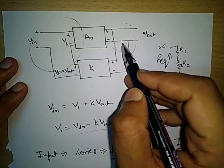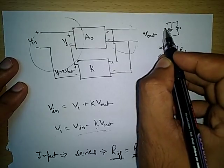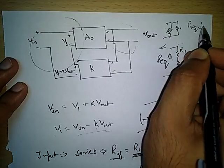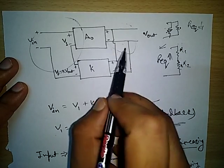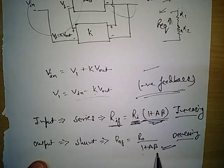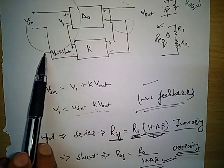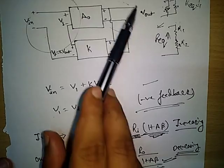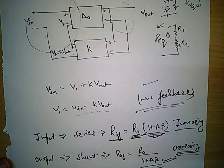At the output, there is a parallel or shunt connection. We know that when two resistances are connected in parallel, the overall equivalent resistance decreases — less than either individual value. So the output impedance decreases, and it decreases by the factor (1 + Aβ): R_OF = R_O / (1 + Aβ). At input, series connection increases impedance; at output, shunt connection decreases impedance — both by the factor (1 + Aβ).